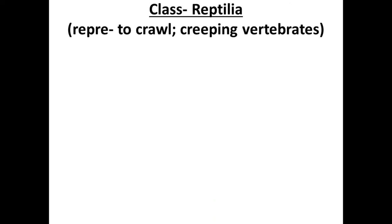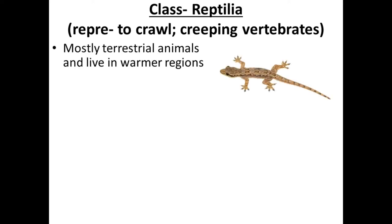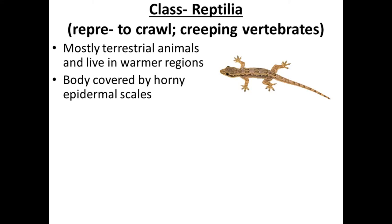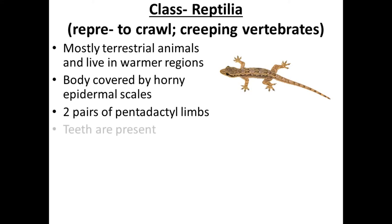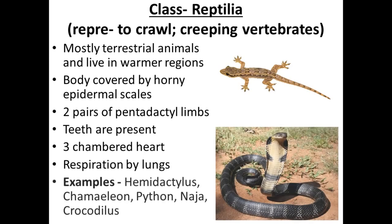Next is Class Reptilia. 'Repere' means to crawl — vertebrates that crawl or creep, such as lizards and snakes. They are mostly terrestrial animals found in warmer regions. The body is covered by horny epidermal scales. They have two pairs of pentadactyl limbs and teeth are present. They have a three-chambered heart and respiration is by lungs. Examples: Hemidactylus (gecko), chameleon, python, Naja (cobra), crocodile.